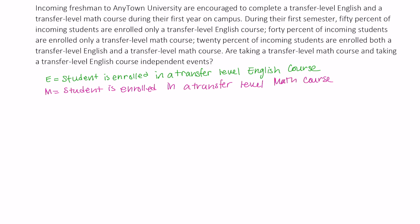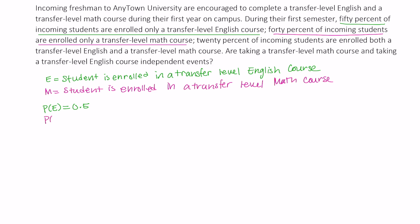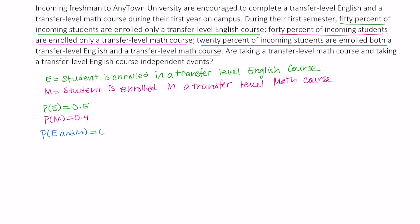Now let's figure out what some probabilities are, and let's begin with the English course. Of these incoming students, 50% of them are enrolled in only a transfer level English course, so the probability of E is 0.5. Of these incoming students, 40% of them are enrolled only in a transfer level math course, so the probability of M is 0.4. And finally, 20% of these incoming students are enrolled in both a transfer level English and a transfer level math course, so the probability of E and M is equal to 0.2.